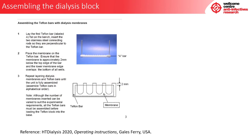Now the dialysis block can be assembled according to the manufacturer's instructions. The instructions from HT Dialysis are as follows. To assemble the Teflon bars with dialysis membranes, first lay the first Teflon bar labelled A flat on the bench. Insert the two stainless steel connecting rods so that they are perpendicular to the Teflon bar. Place the membrane on the Teflon bar, ensuring the membrane is approximately 2 mm below the top edge of the bar and the lower membrane edge overlaps the bottom of all wells. Repeat layering dialysis membranes and Teflon bars until the unit is fully assembled, in alphabetical order. Note that all Teflon bars must be assembled before loading the Teflon block into the base.